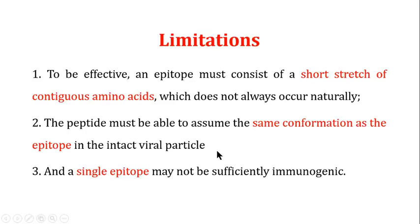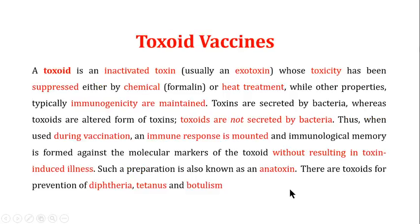Another limitation is that the peptide must be able to assume the same conformation as the epitope in the intact viral particle. When individual peptides are removed from the whole protein, the surface peptide may not retain the same conformation of the epitope, meaning antibodies will not interact with it and immunity will not be generated. Additionally, a single epitope may not be sufficiently immunogenic, so multiple epitopes may need to be combined to generate adequate immunity.